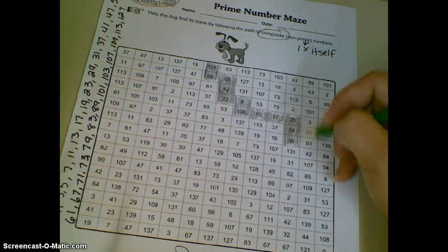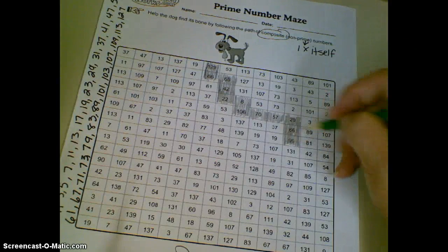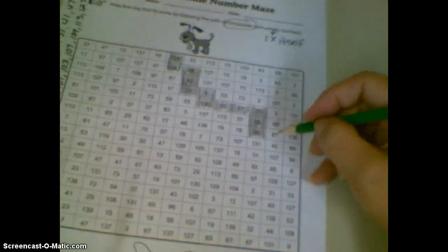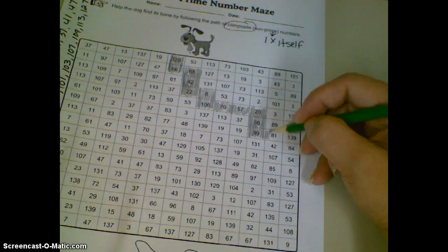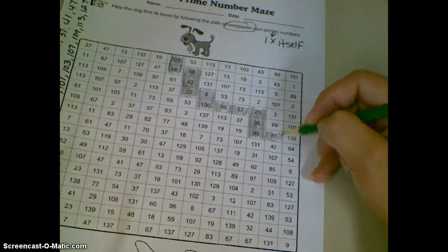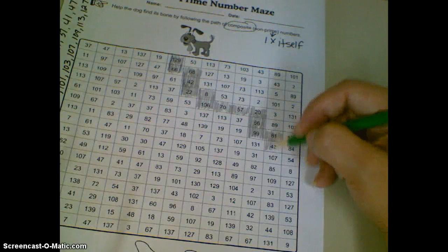99 is composite, even though it's odd, 33 times 3. Here's another one that's odd, but is still composite. 9 times 9 is 81. Here's one. 6 times 7 is 42.